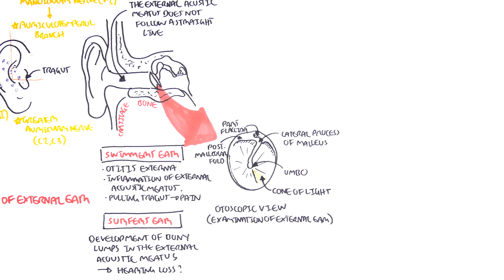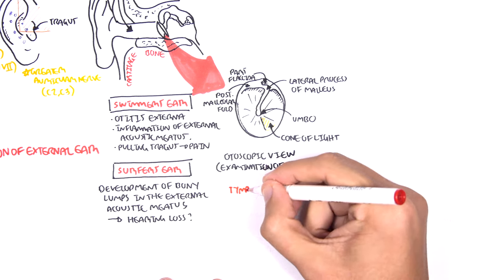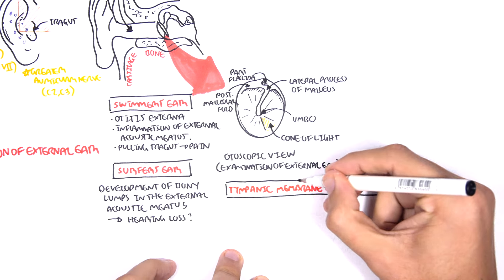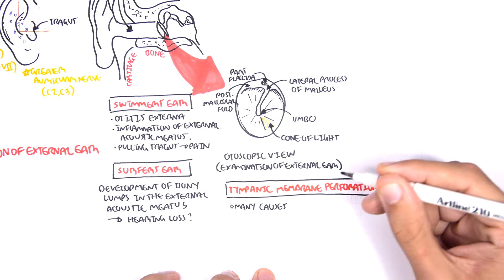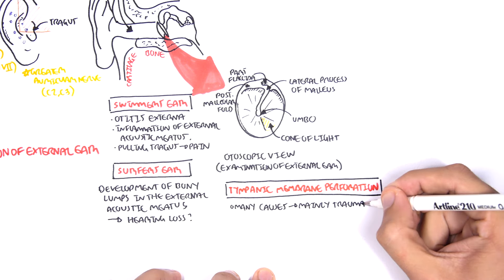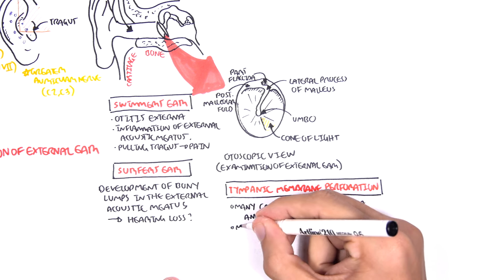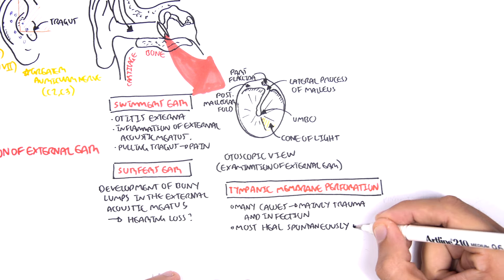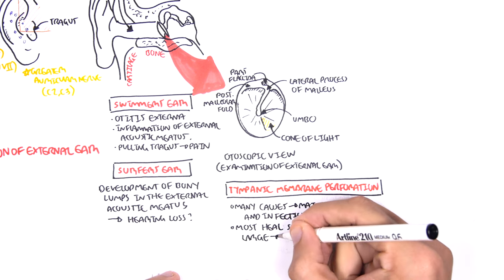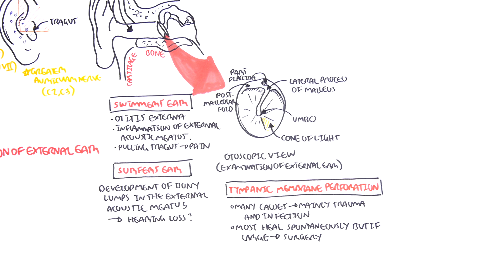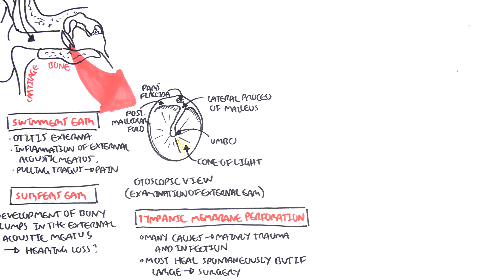The malleus is important because it is actually the first bony ossicle that articulates with the eardrum. The eardrum receives sound vibrations, which triggers a cascade of vibrations within the middle ear, which then send these vibrational signals to the inner ear. Problems such as tympanic membrane perforation, which is a result of many causes, mainly trauma and infection, can be a problem in transmitting such processes and can be very painful.